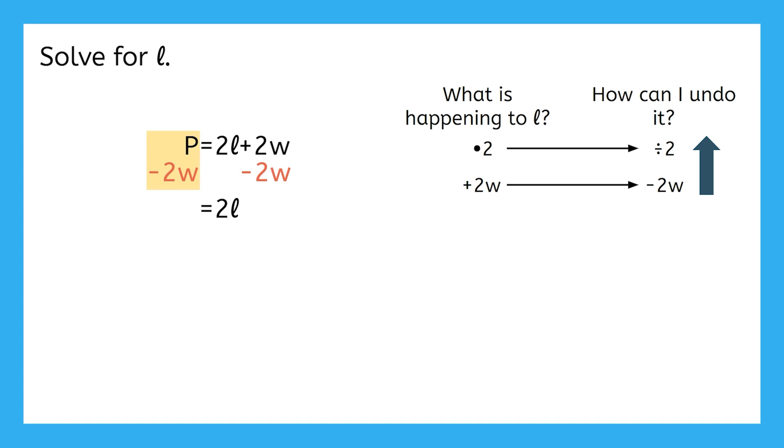Well, they're not like terms because they have different variables, so we can't just combine them. This is actually just going to stay as P minus 2W.